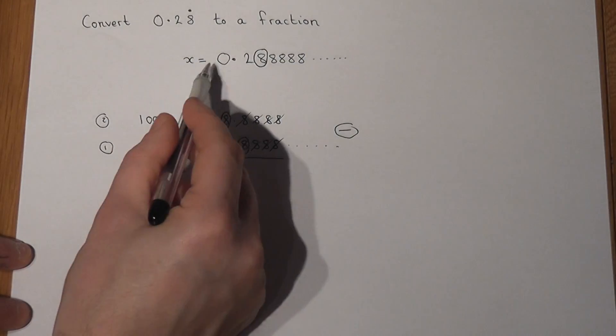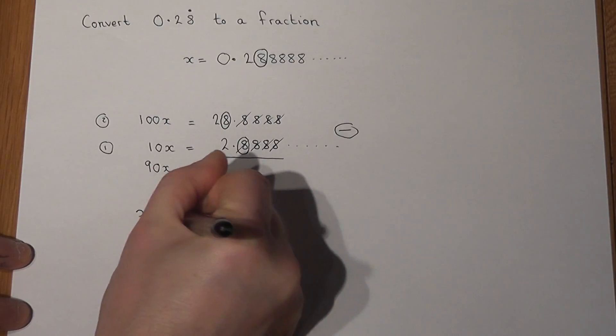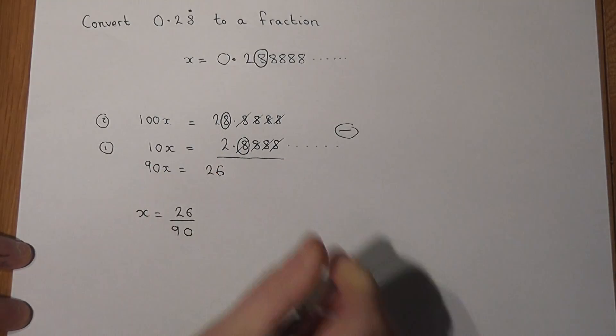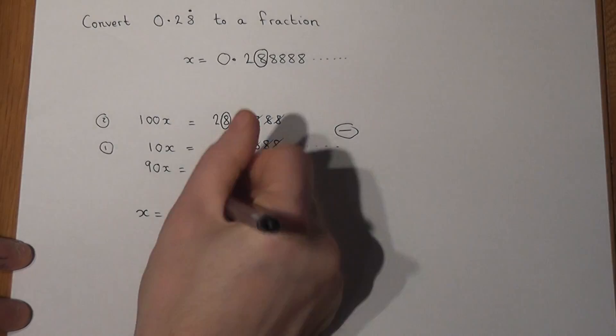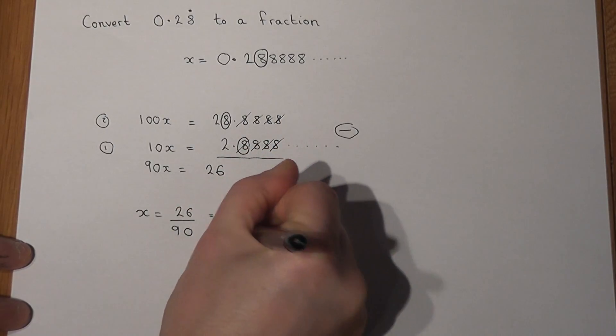So to find out what X equals as a fraction, I do X equals 26 over 90, which cancels down further to 13 over 45.